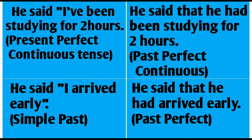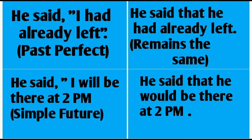He said, 'I arrived early.' This is in simple past. When we change this into indirect speech, it becomes past perfect: he said that he had arrived early. He said that he would be there at two p.m. This is in simple future tense. When we change this into indirect speech, it becomes: he said that he would be there at two p.m.